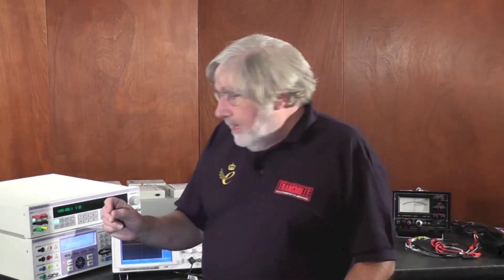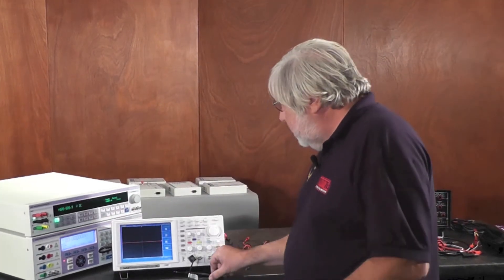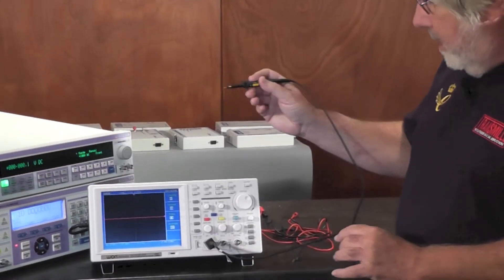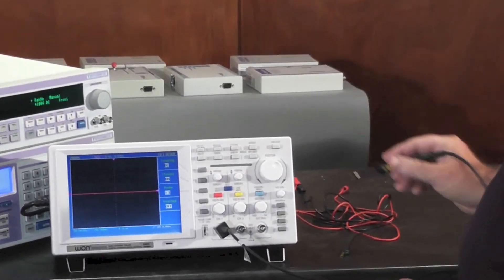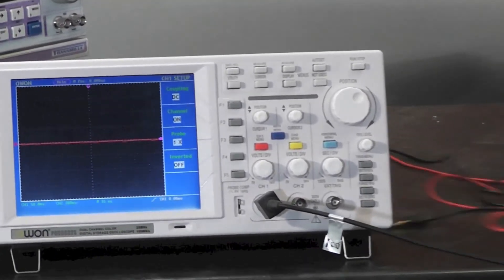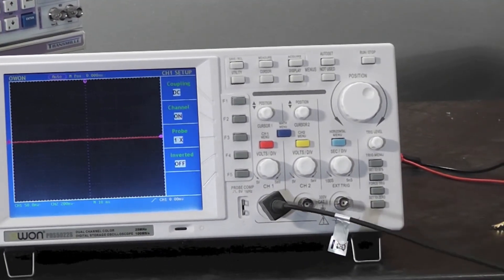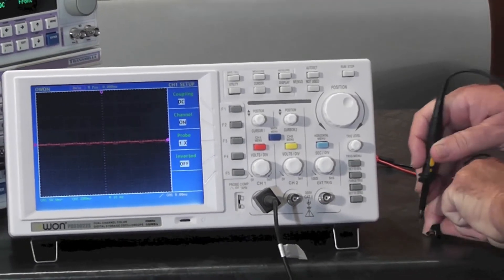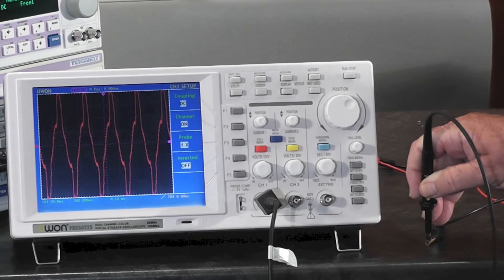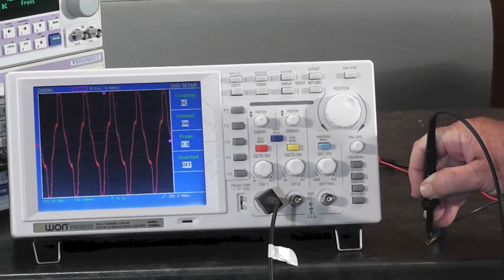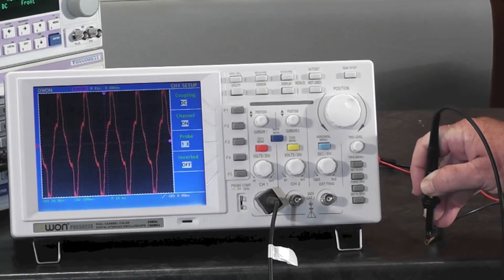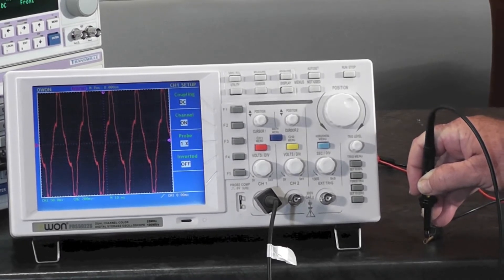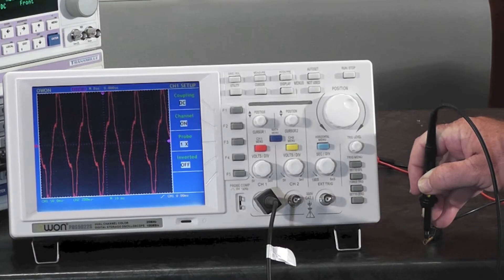Just to give you a little example of this, on a scope we've got the scope probe here with a sensitivity of 50 millivolts per division. Here on the bench, I've just got a couple of bits of wire running around which are acting as aerials, and when I put the scope probe on the wire, you can see it's going right off the screen. So just on this bit of wire here, we've got over 400 millivolts peak-to-peak of noise.